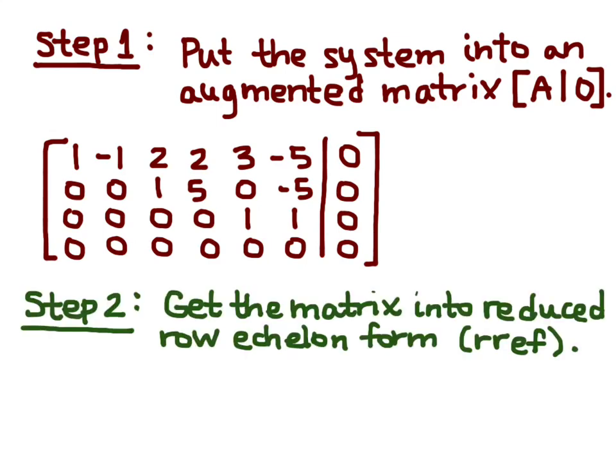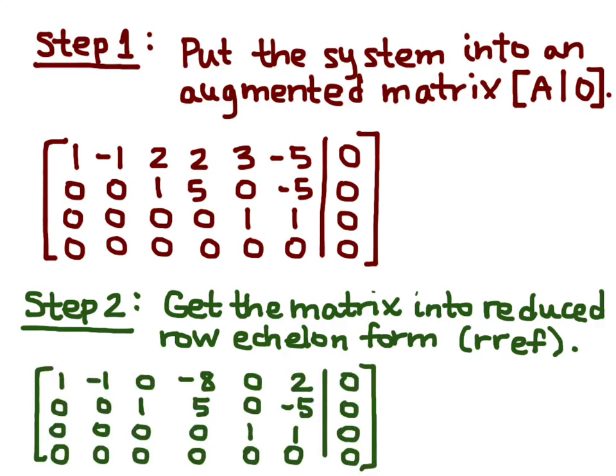And then step two is to get the matrix into reduced row echelon form. Now, you can do this on your calculator fairly quickly, and so we get the reduced row echelon form as given.